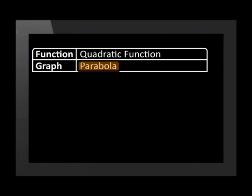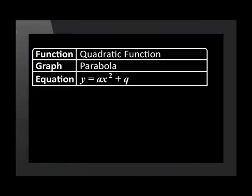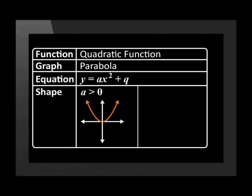Now that we've covered the main terms, let's revise what we learned in grade 10 about certain types of functions: the parabola, hyperbola, and exponential. The quadratic function is known as the parabola graph. The equation of the parabola is y equals ax squared plus q. The value of a determines the shape, and q results in the vertical shift and is thus the y-intercept. If a is greater than 0, the parabola is an upward concave shape — we remember it as having a happy face.